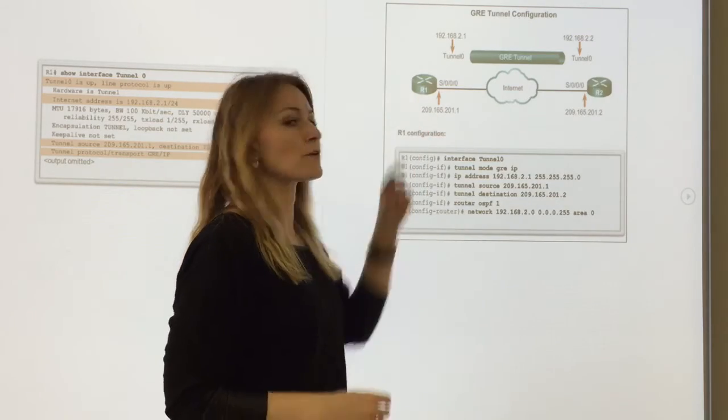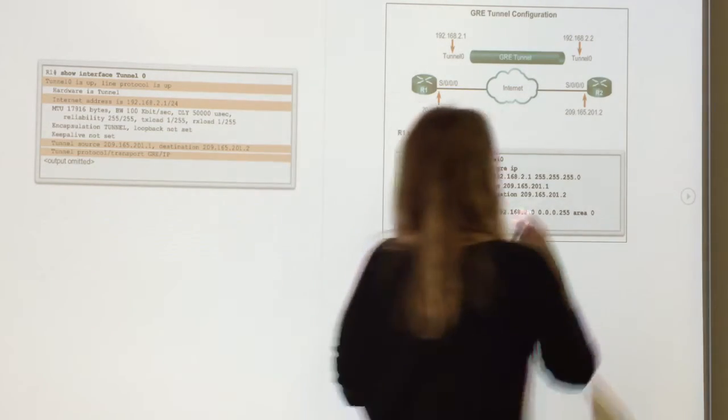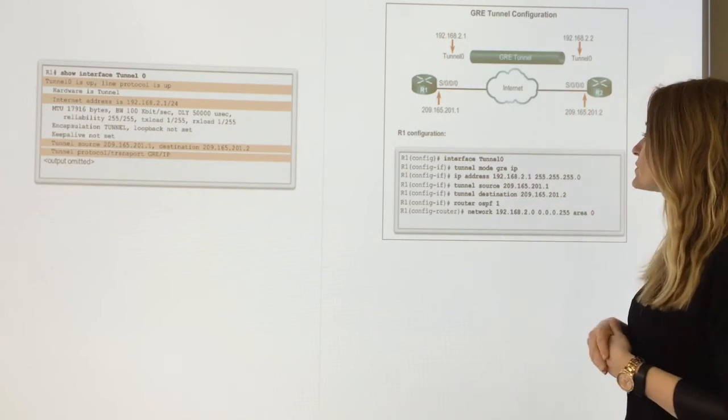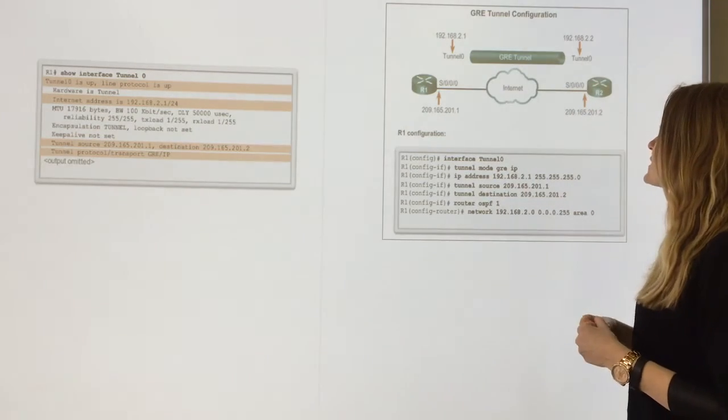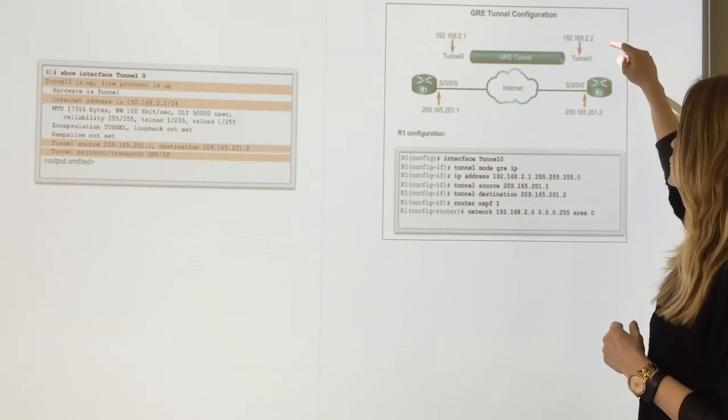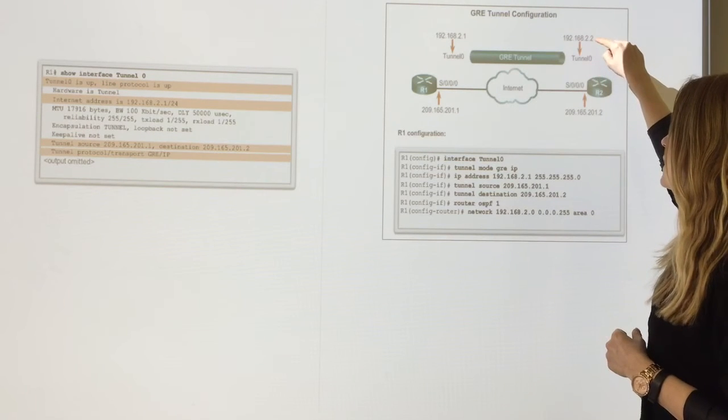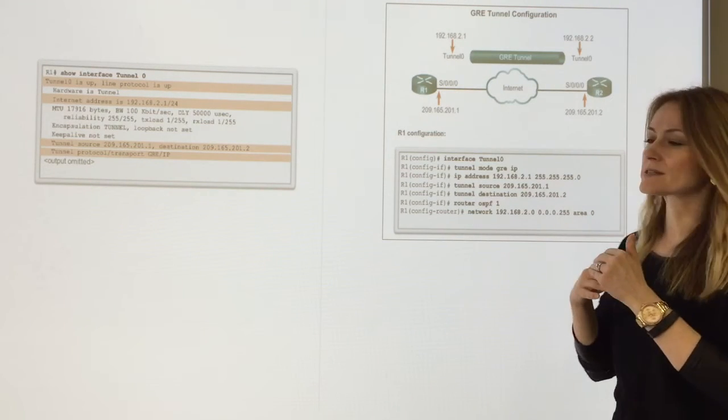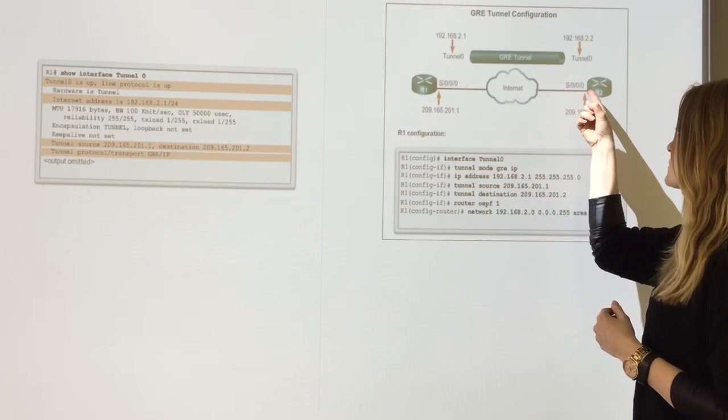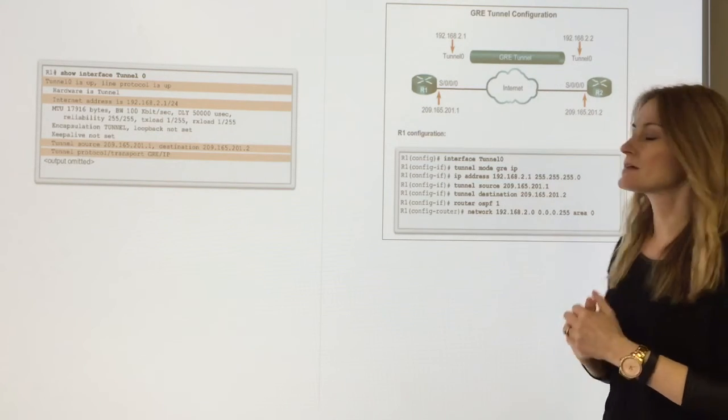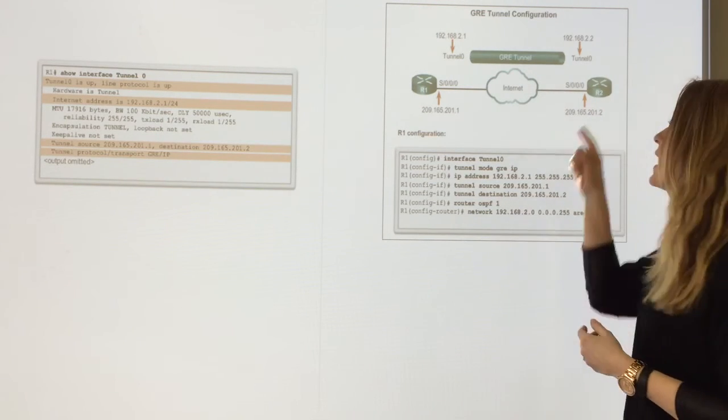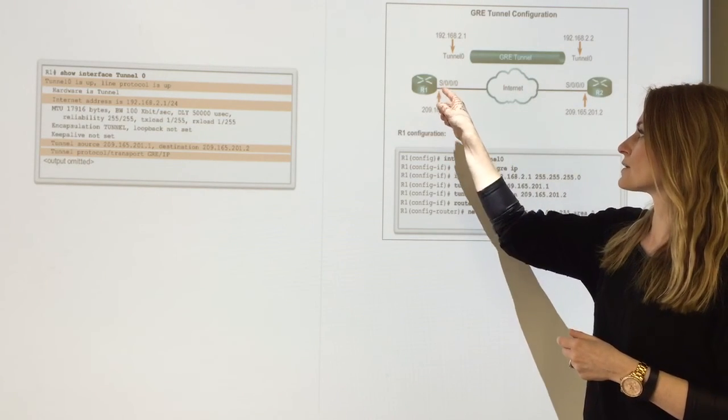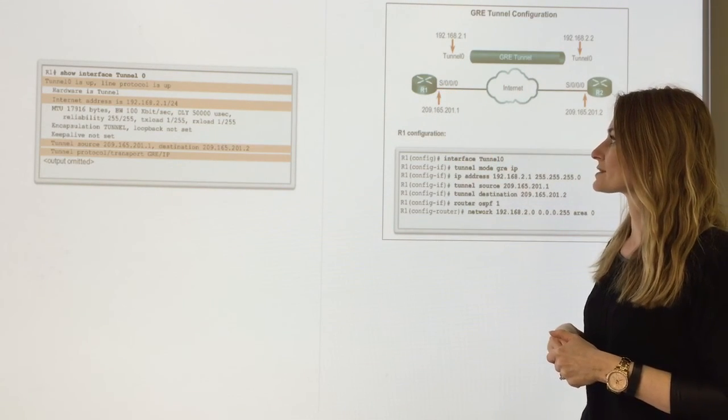That was all from R1's perspective. R2 will have the opposite perspective. R2's IP address is 192.168.2.2, because that's this side of the tunnel. The tunnel source address is its own interface, 209.165.201.2, and the tunnel destination is 209.165.201.1.